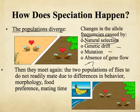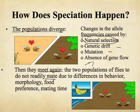Eventually, those flies do meet again, but the populations can no longer mate and can no longer have fertile offspring because they developed so many differences due to natural selection, genetic drift, etc. They have differences in behavior, anatomy, food preference, and mating time. Because they no longer mate, they're no longer the same species.